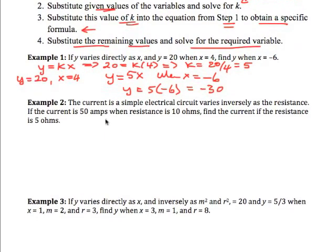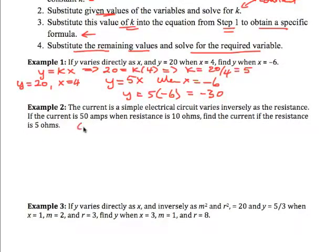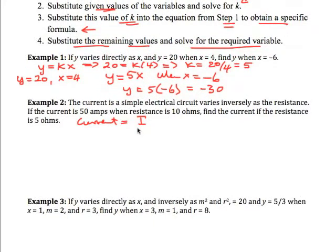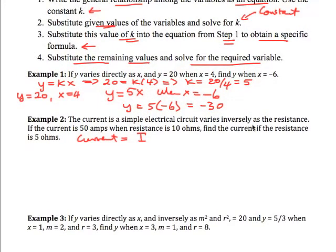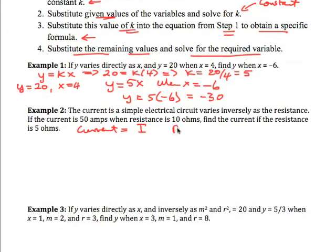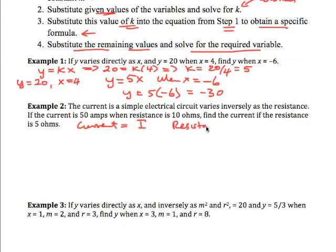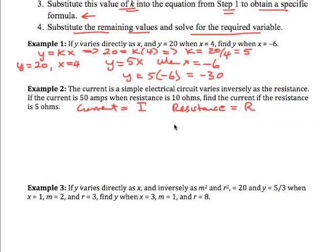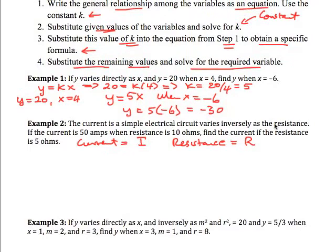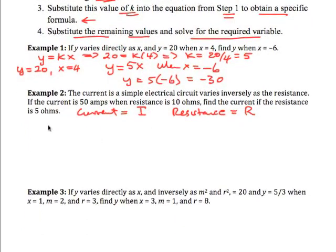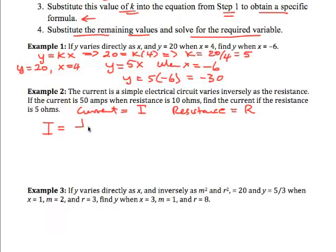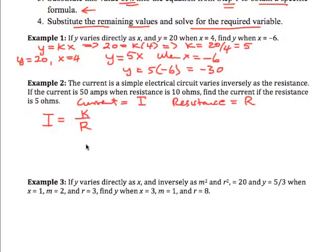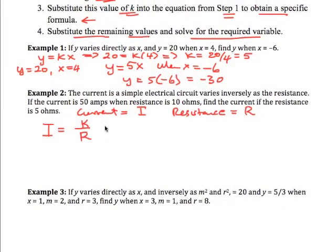Now here's a word type problem. Let's suppose we have current. The usual form is I in electricity, and that varies inversely with resistance. Let's call resistance its normal symbol which is R. So the current varies inversely as the resistance. So this means current is equal to k over R. k is the constant of proportionality.